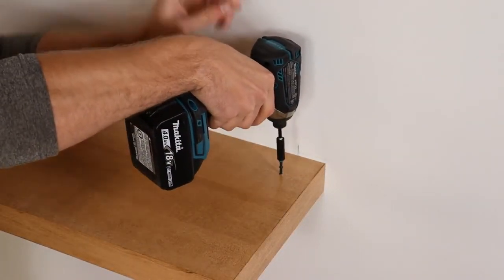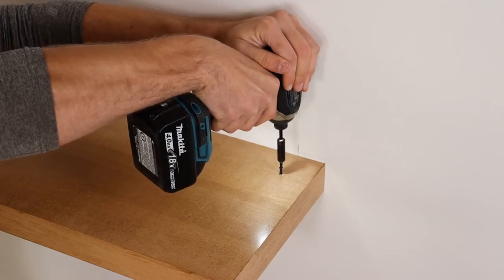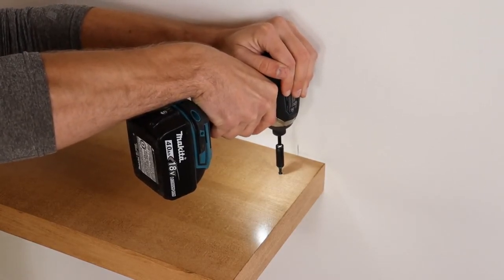Use the number one square drive bit to drive the one-inch self-tapping trim screw through the hole and into the bracket to secure the shelf.